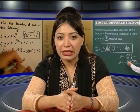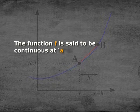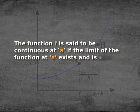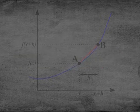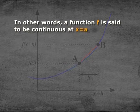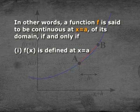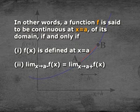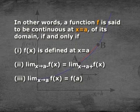Let f be a function and a be a point in the domain of f. The function f is said to be continuous at a if the limit of the function at a exists and is the same as the value of the function at a. In other words, a function f is said to be continuous at x = a if and only if: first, f(a) is defined at x = a; second, limit x→a⁻ of f(x) equals limit x→a⁺ of f(x); and third, limit x→a of f(x) equals f(a).